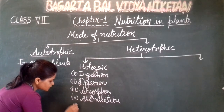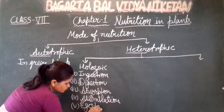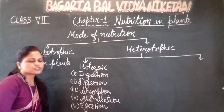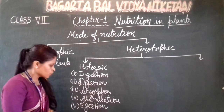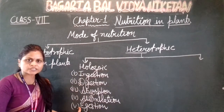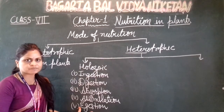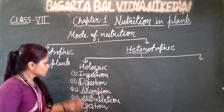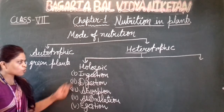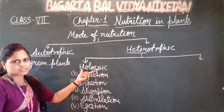And the last step is egestion — जो undigested food होता है, उसे हम body से बाहर remove कर देते हैं। This process is known as egestion. So, by these five steps, holozoic mode of nutrition is seen.